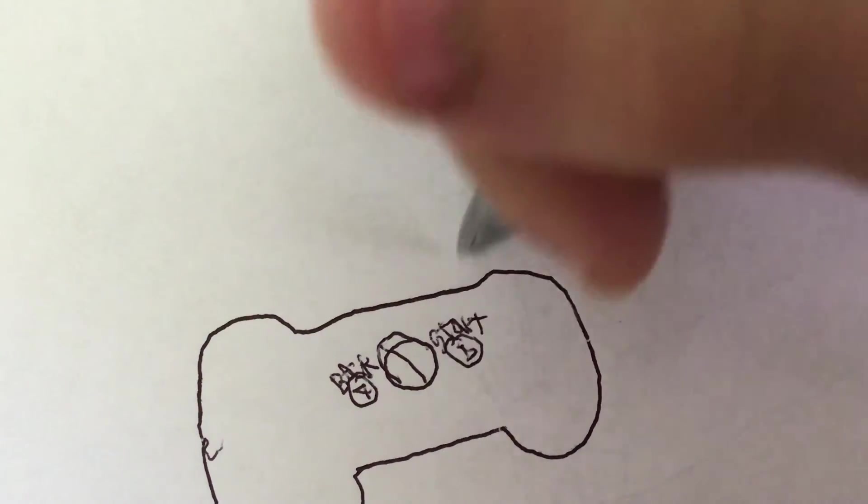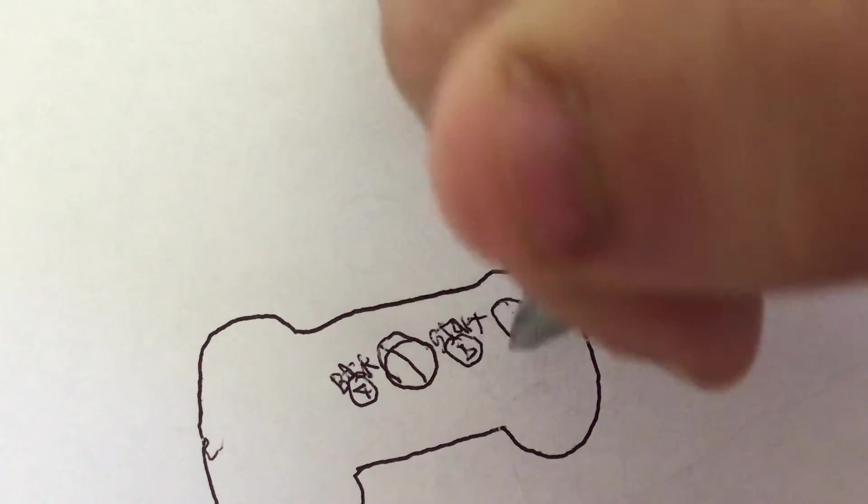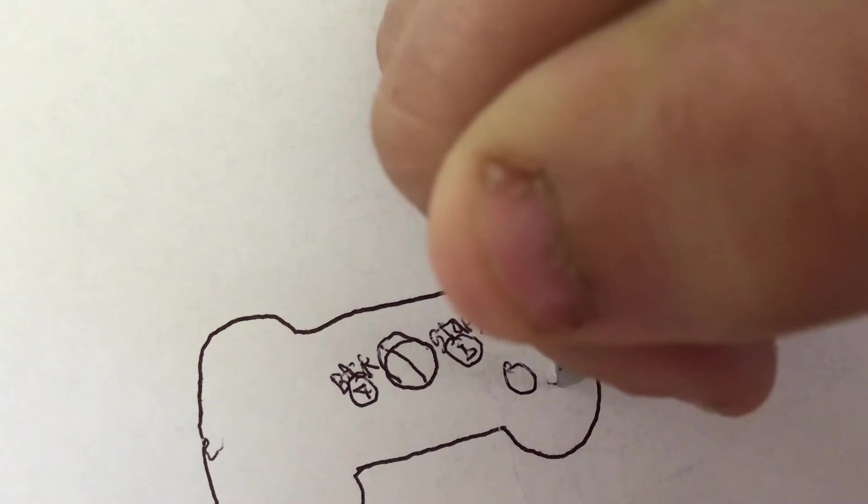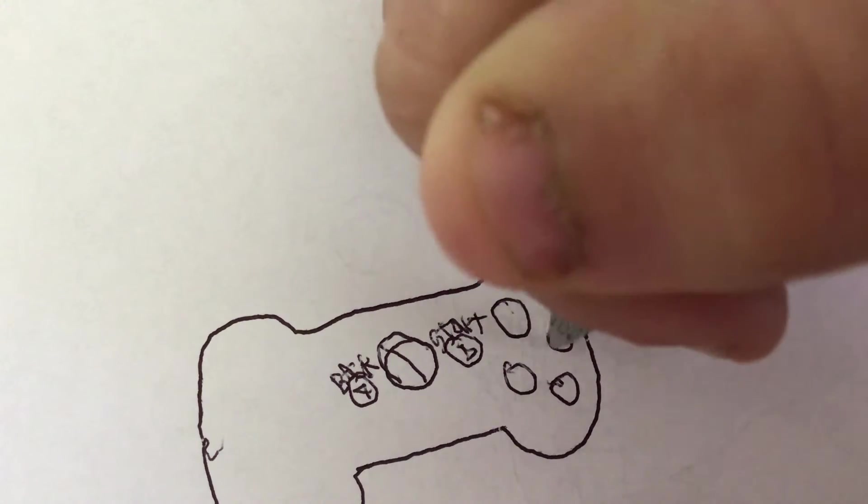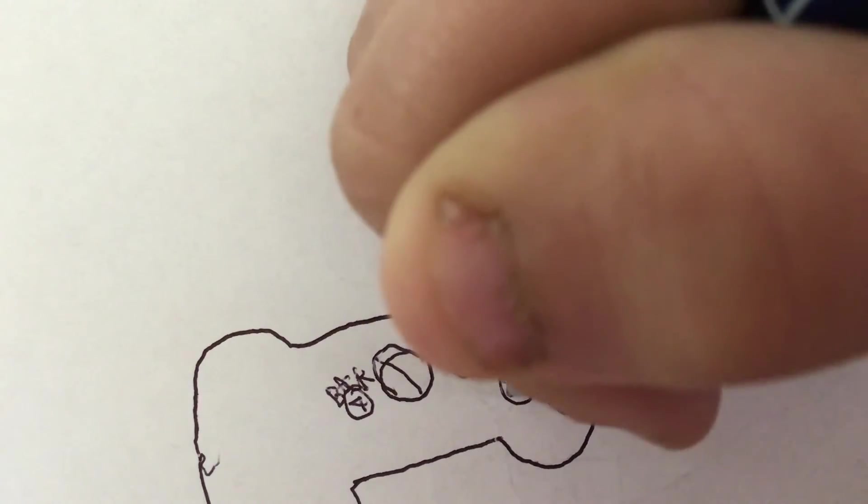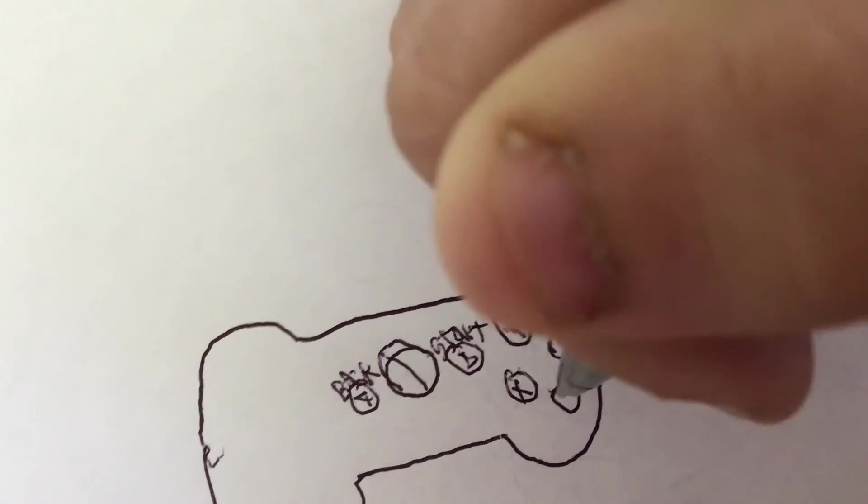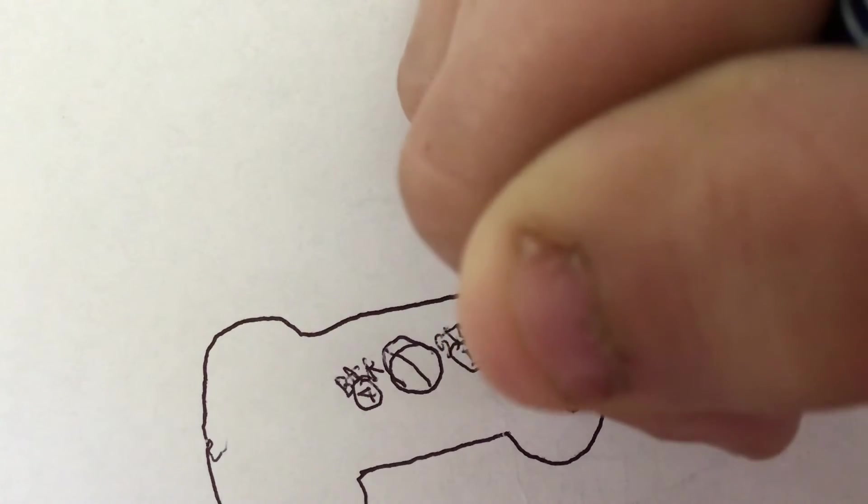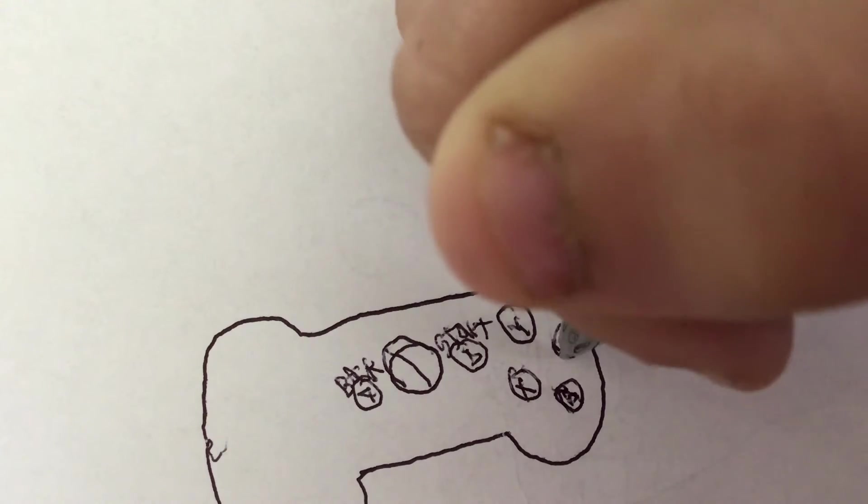And now we're going to do all four of the buttons. We're going to draw four dots. And on the top one, we're going to put a Y. And then X. And then an A. And then a B.